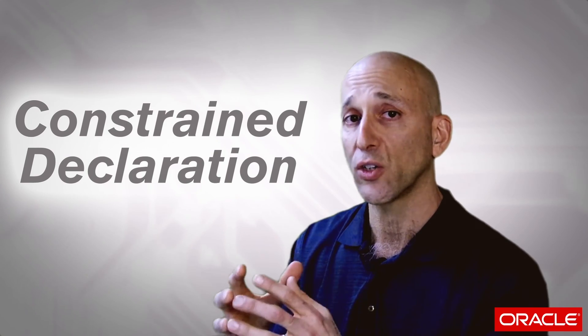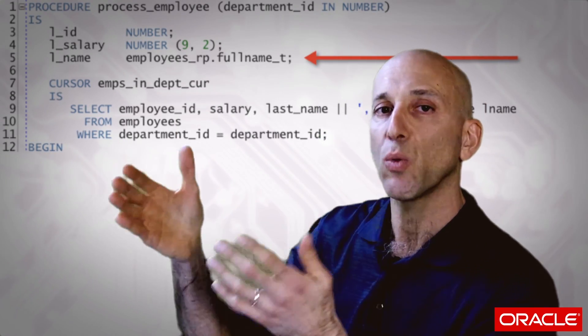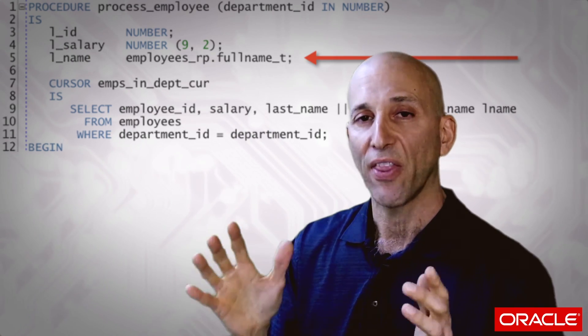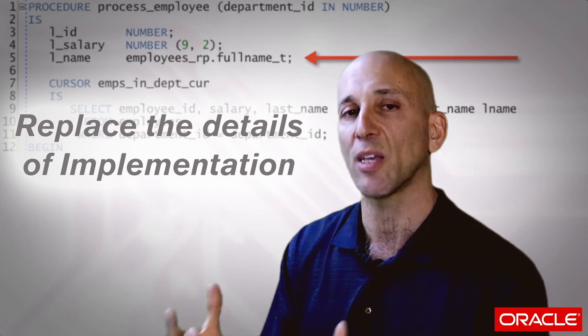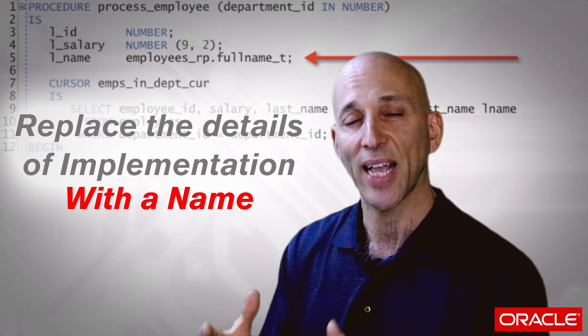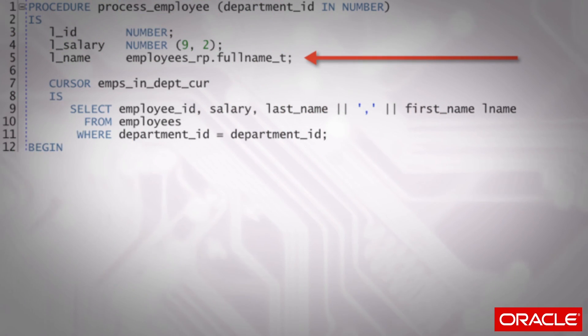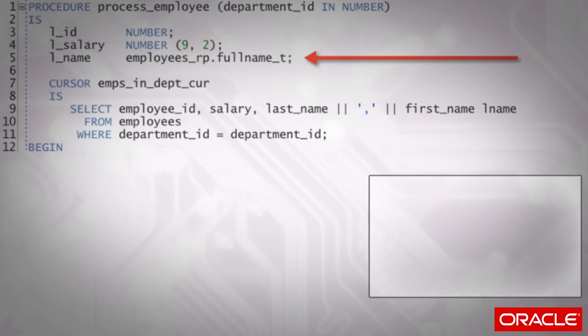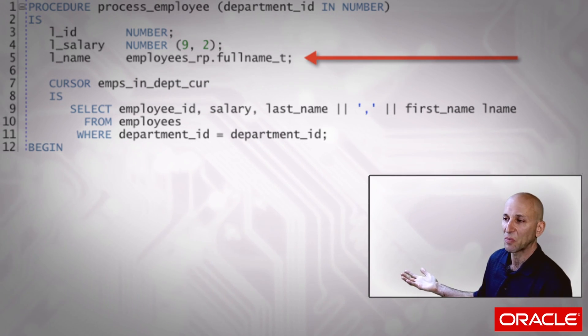What I've done is take a constrained VARCHAR2 declaration — every VARCHAR2 declaration is a constraint because you have to provide a maximum size — and I've taken that out of this specific instance of code and replaced it with a name. In general, that's the way you get rid of hard coding: you replace the details of the implementation with a name, and the name hides the details and tells you what it is. So my code ends up being more self-documenting — I don't need a comment for what that thing is, it's a full name, it's pretty obvious.